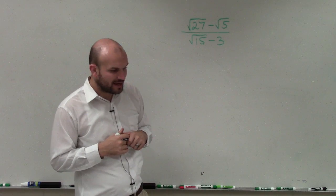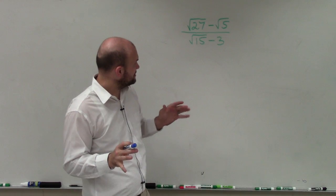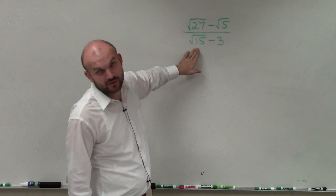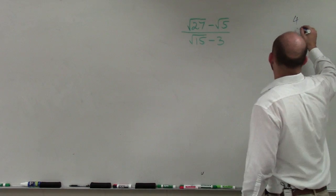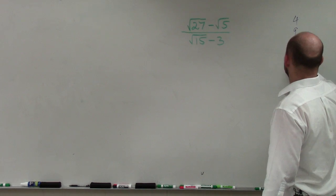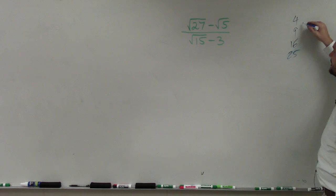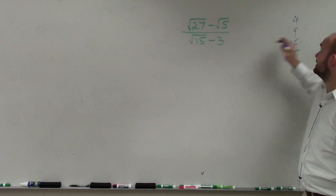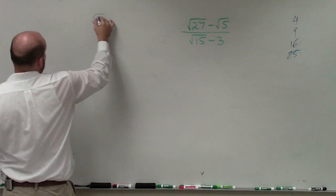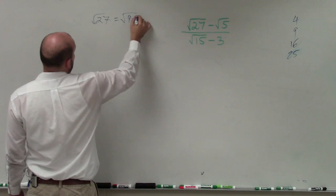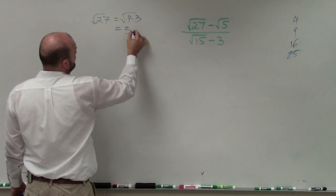The first thing I want to do before getting into this is simplify all of my radical expressions. I cannot simplify the square root of 5, I cannot simplify the square root of 15. However, I do know that the largest square number that evenly divides into 27 is 9. So I can break apart the square root of 27 and rewrite it as the square root of 9 times 3. I know the square root of 9 is 3, but I cannot simplify the square root of 3.